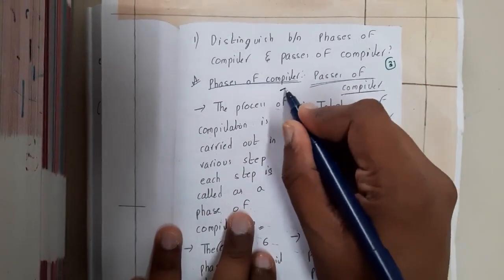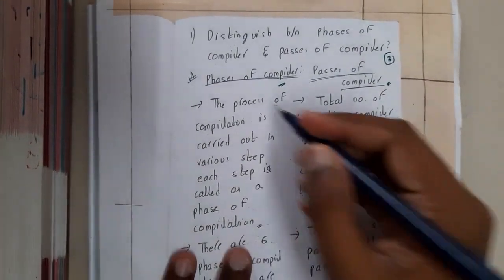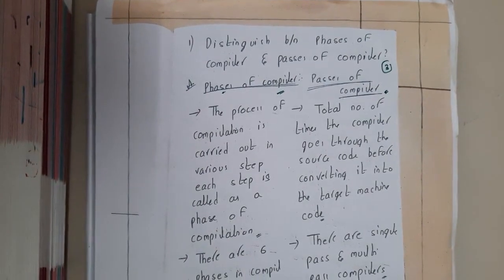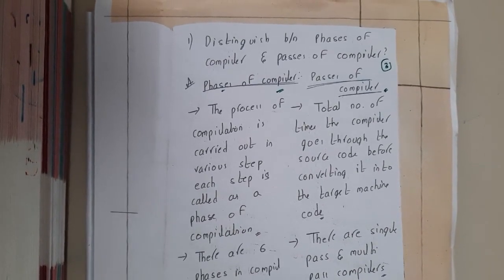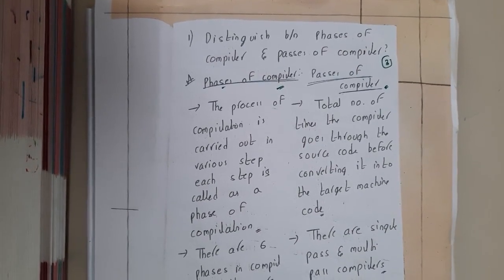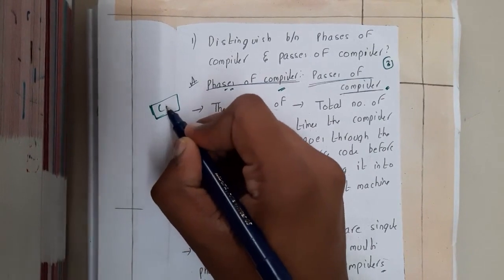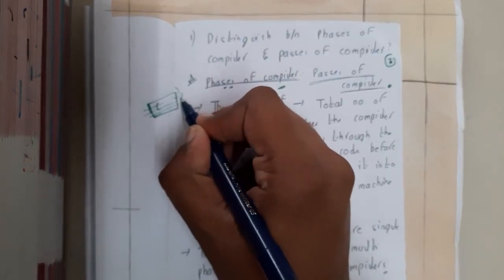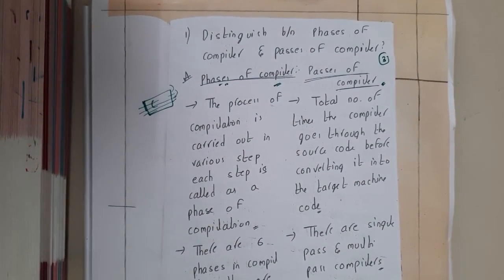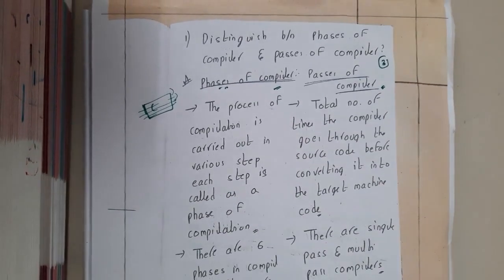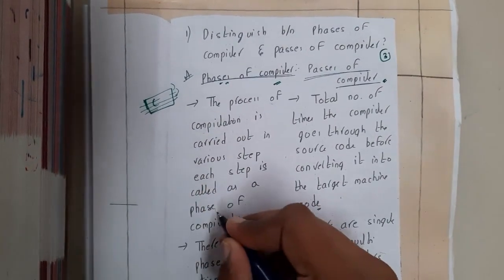First, let us go through phases of compiler versus passes of compiler. We'll be discussing all the phases of compiler in detail in the next lecture, so for now we'll just understand the differences. Basically, phases are nothing but the whole process of compilation divided into multiple phases. By doing multiple phases, we get the final output from our source code to our target code. The process of compilation is carried out in various steps, and each step is called a phase of a compiler.